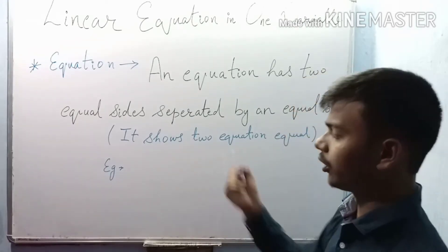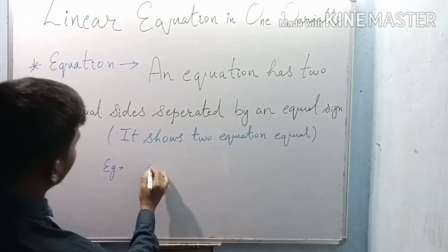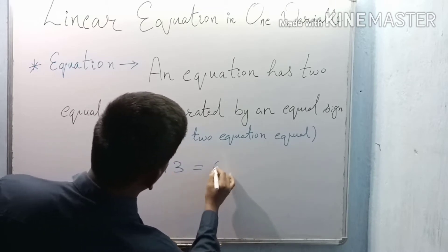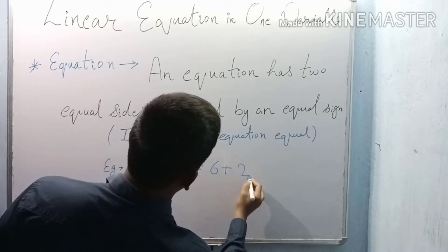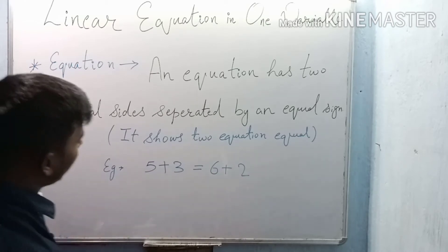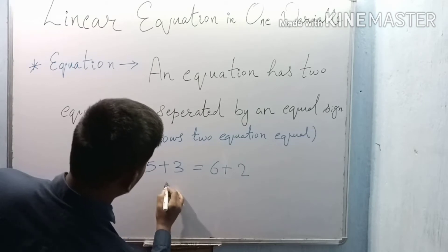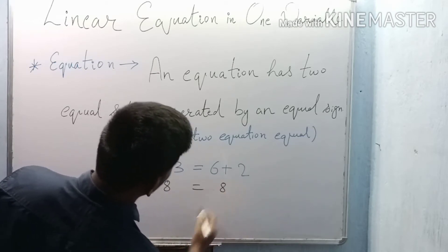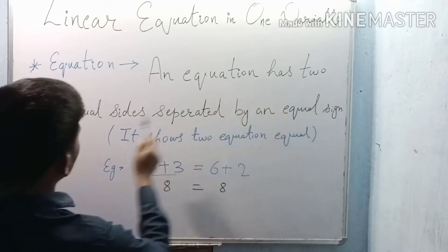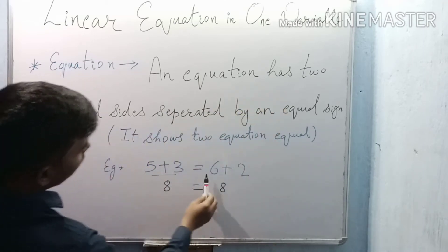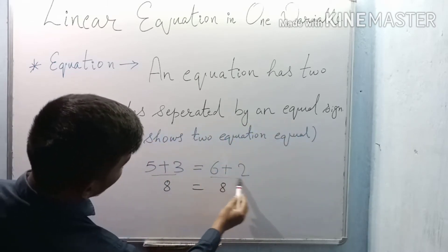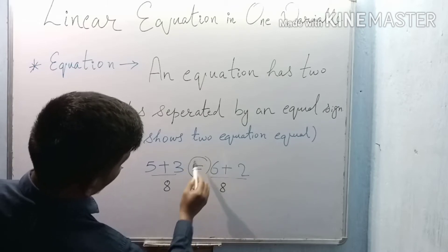For example, 5 plus 3 equals 6 plus 2. Is 5 plus 3 equal to 8? Yes. And 6 plus 2 is also equal to 8. So this is an equation — the equation has two equal sides separated by an equal sign.